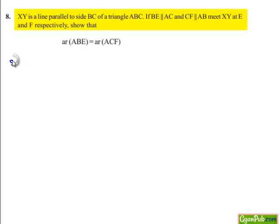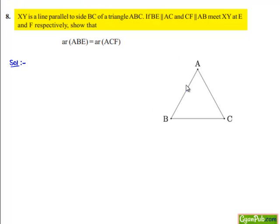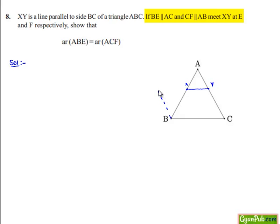Moving on to the solution, let us consider triangle ABC as shown in the figure. There is a line XY which is parallel to BC, and BE is drawn such that it is parallel to AC. Let us join BE with X. There is also another line CF such that it meets XY at F.